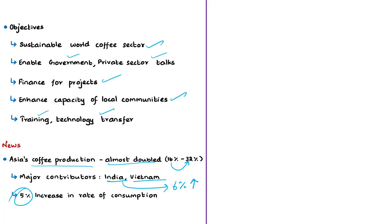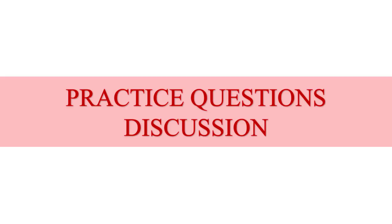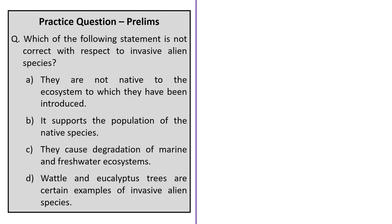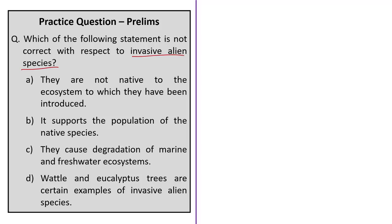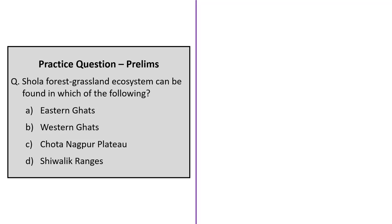Now we have come to the practice questions discussion session. The first question is based on invasive alien species, with four statements given. We have to choose which statement is not related to invasive alien species. Statement B — 'it supports the population of native species' — is wrong, because invasive alien species lead to the decline of native species. Statements A, C, and D are correct and related to invasive alien species. So the correct answer is option B.